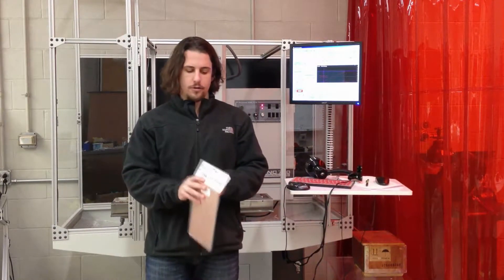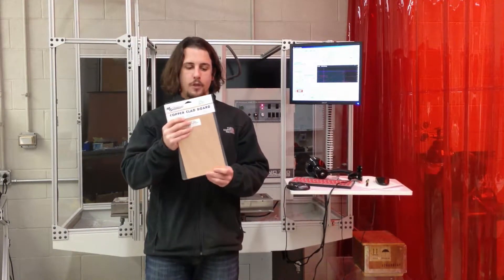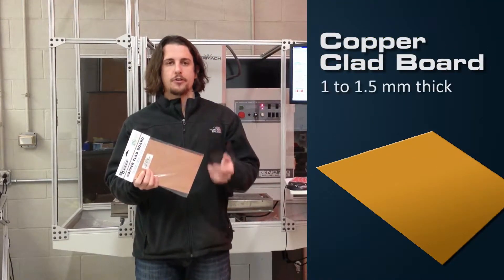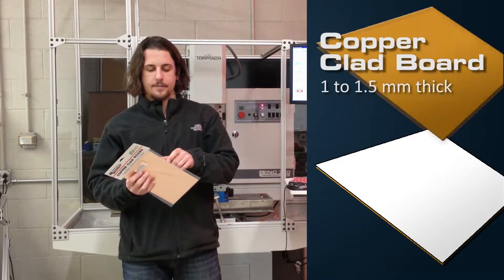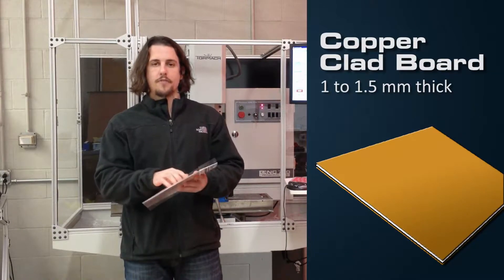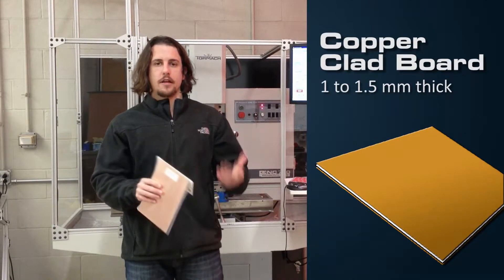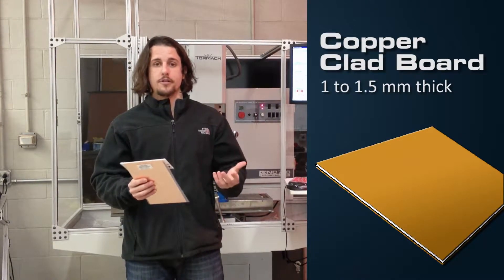The material we are using is the copper clad board which consists of a front and back layer of copper about a millimeter to a millimeter and a half thick and the center consists of fiberglass. This way we can mill off the copper and create the electrical connections we need for the printed circuit board.